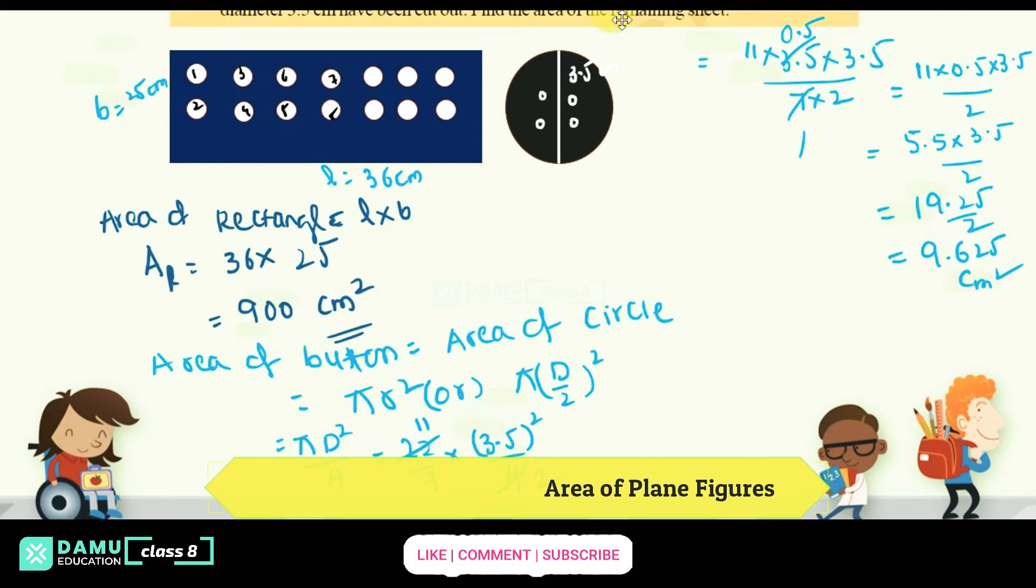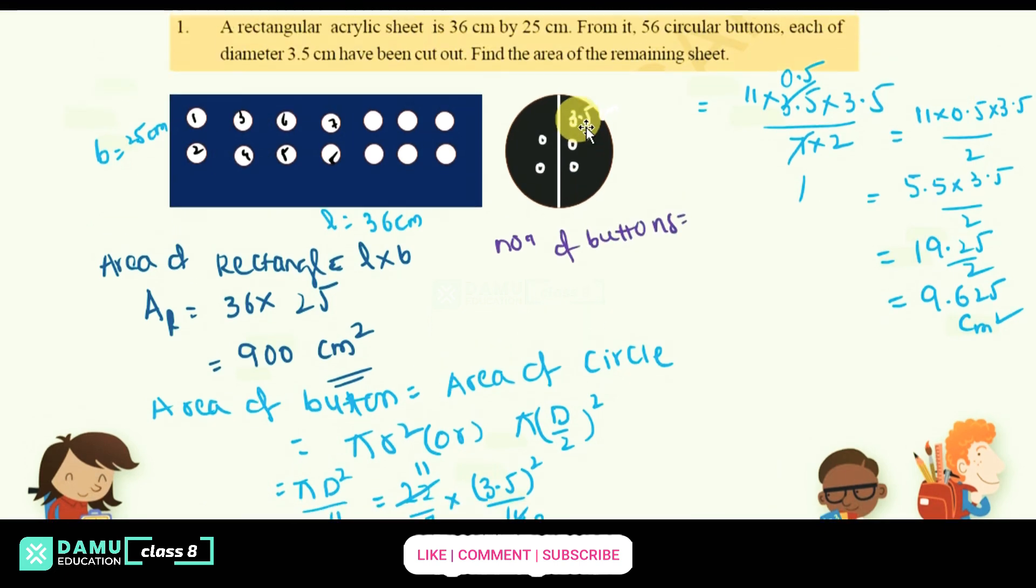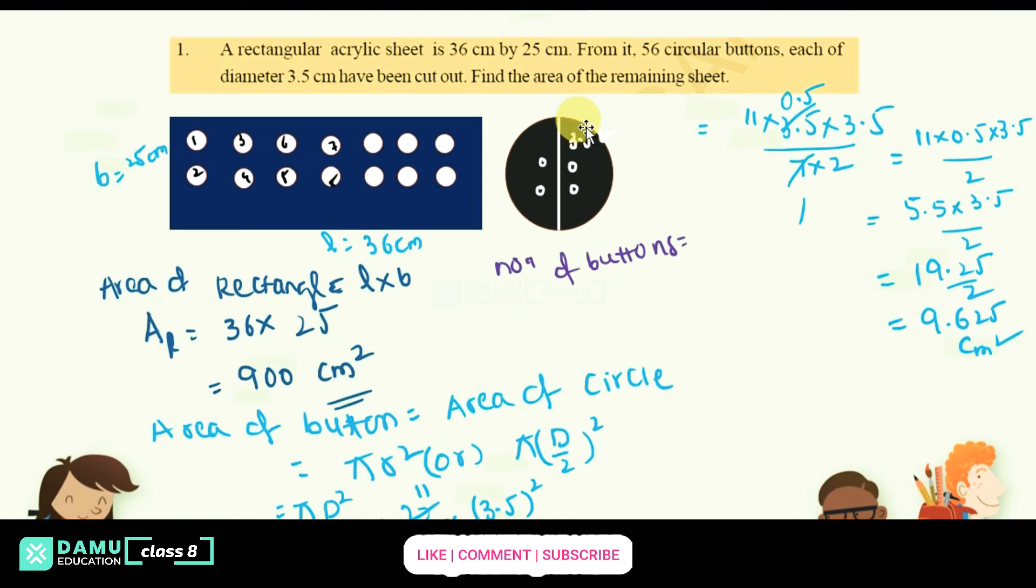Like that how many square buttons are there. So number of square buttons, number of buttons, number of buttons will be equal to, so what is that number? 56 circular buttons, so that is 56.